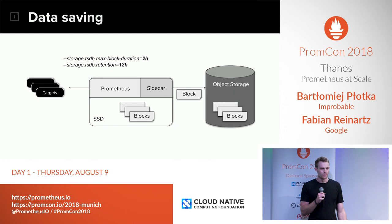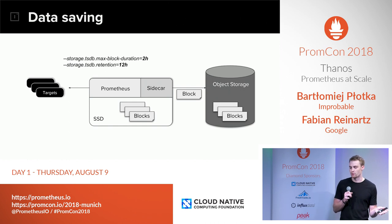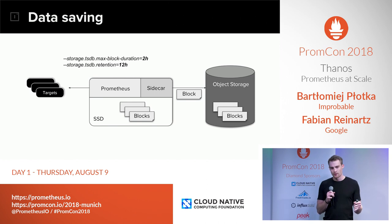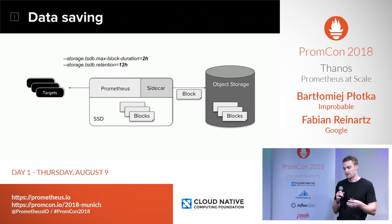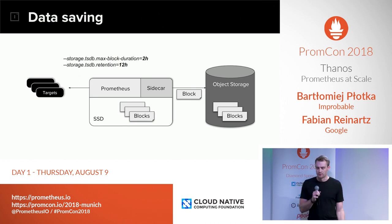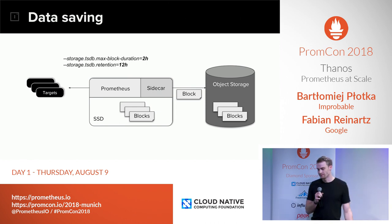We only have to make two small changes. We disable local compaction in Prometheus so that the sidecar uploading blocks and Prometheus trying to compact them don't interfere with each other. In return, we make the retention much shorter, because long-term data now lives in object storage and we just don't need more than 12 to 48 hours on Prometheus, except as a safety margin so we don't lose data if there's a temporary failure.